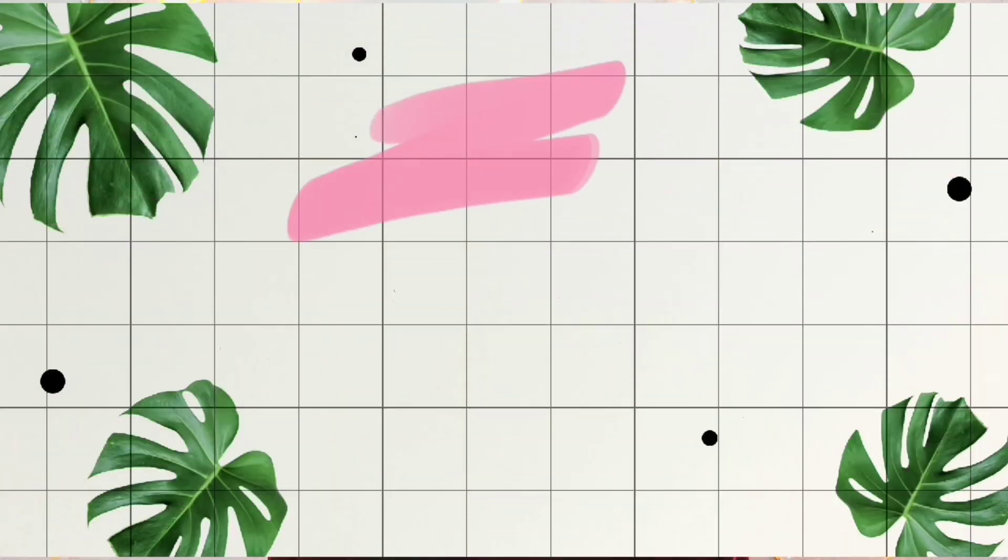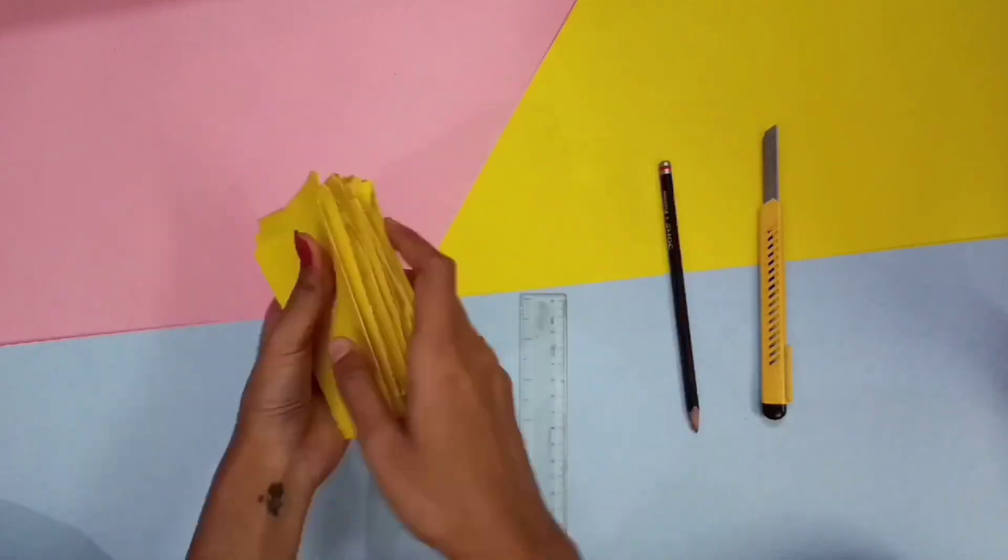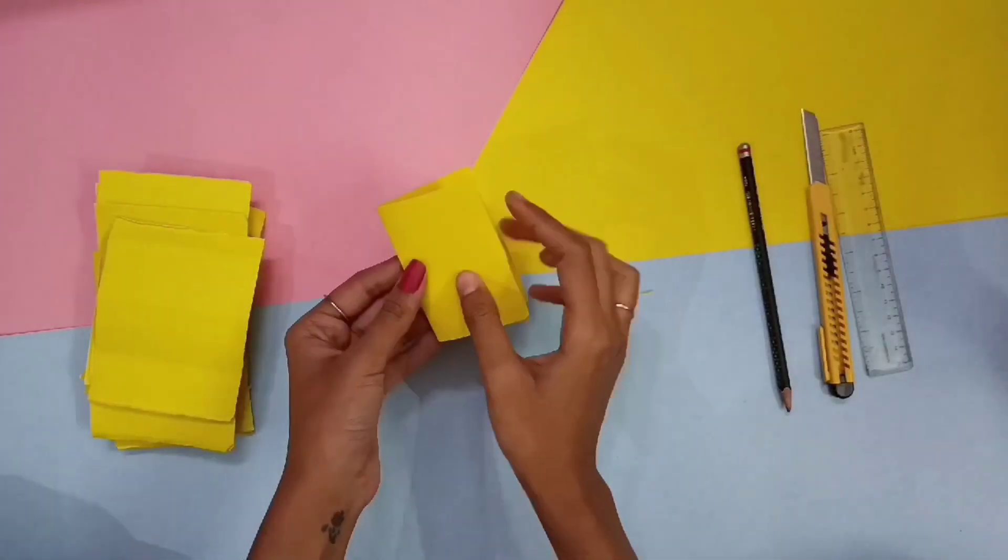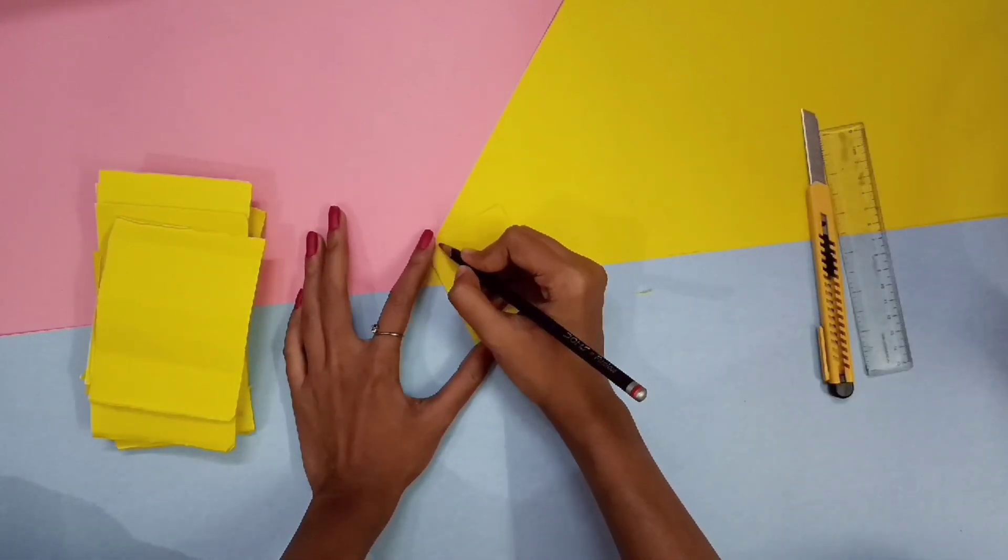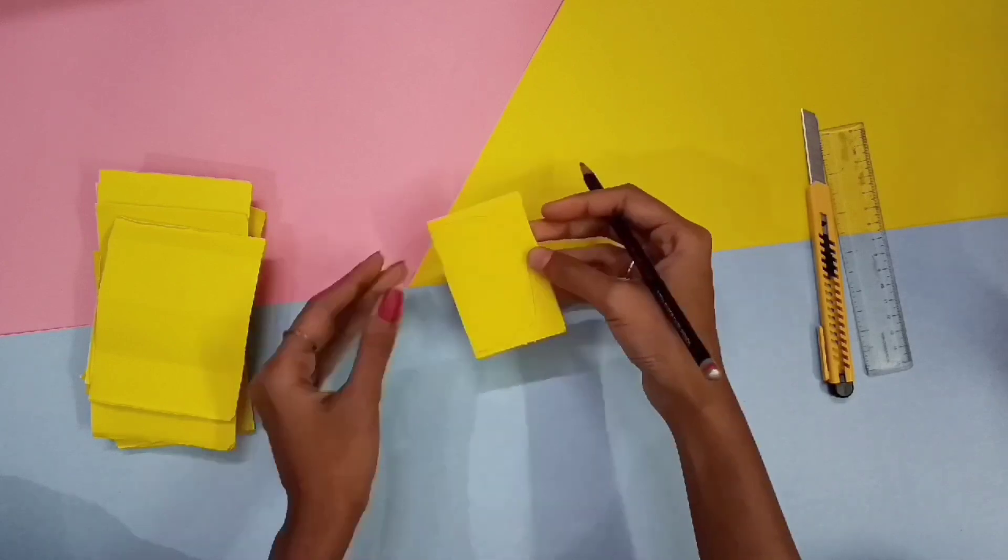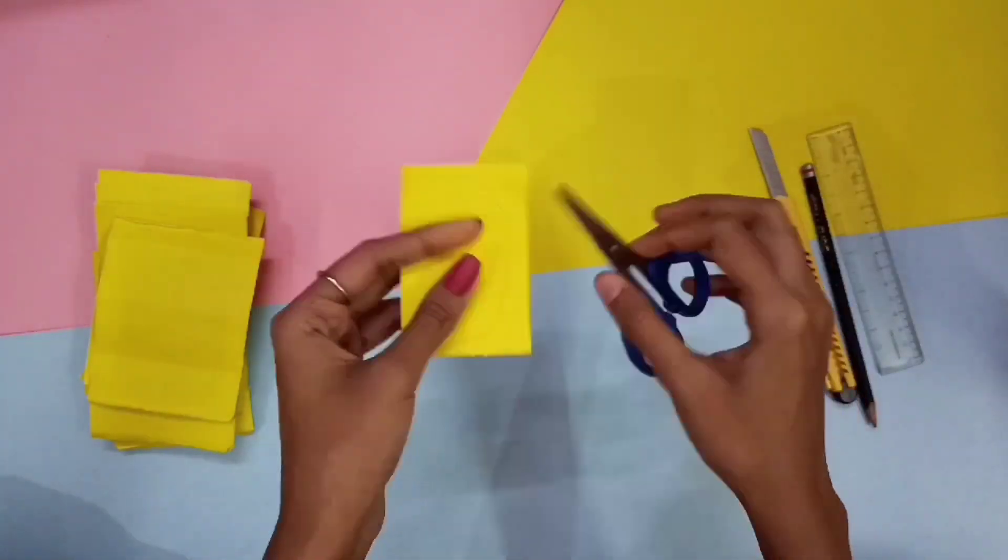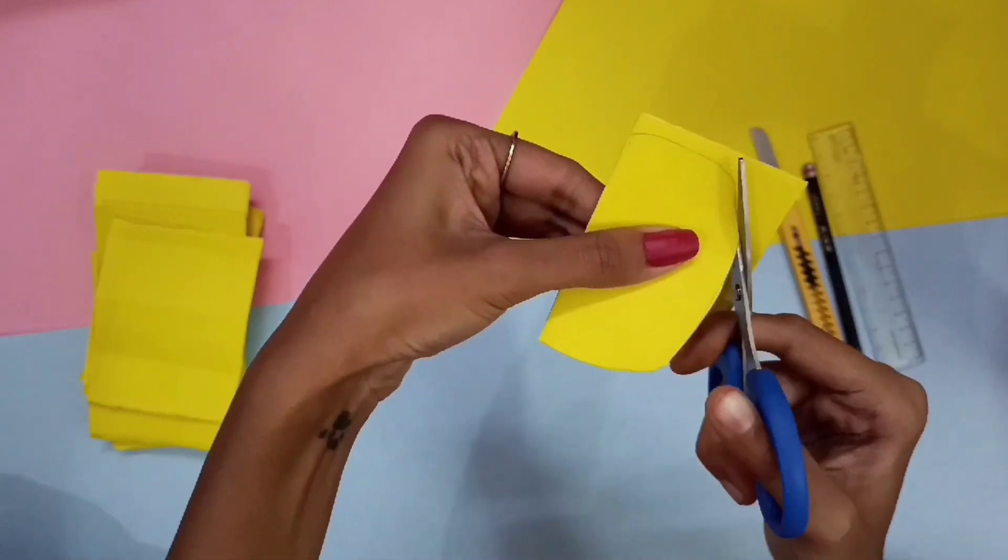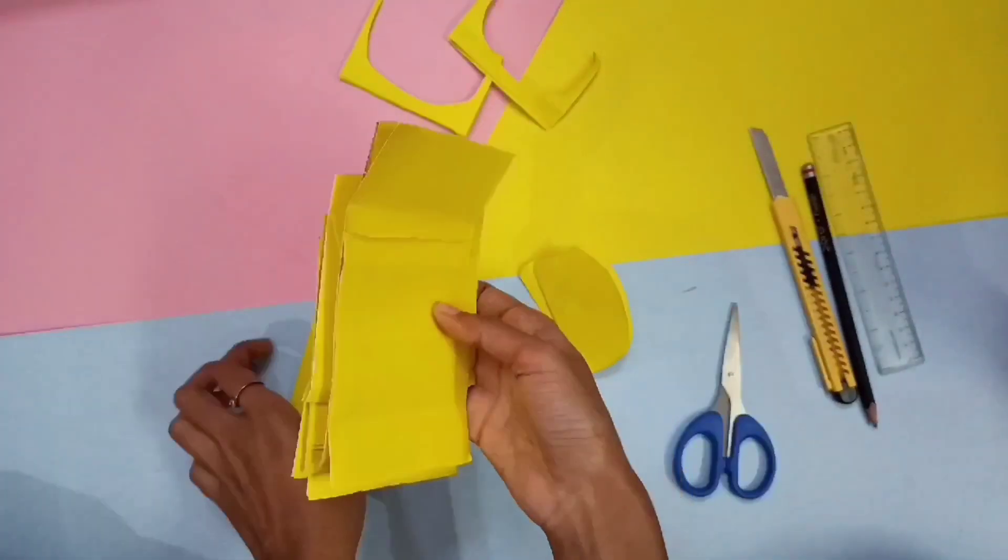So for this DIY firstly we are gonna need some paper. I used the yellow one and I wanted a small paper pineapple so I had to cut them into small pieces. You can cut them any size you want. Then you have to fold it and draw a half pineapple shape just like this and cut it out. Now do the same with the rest of the papers.